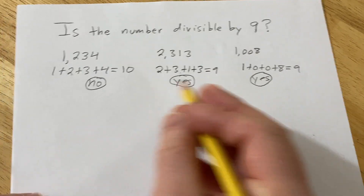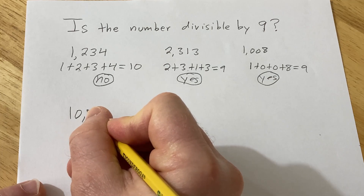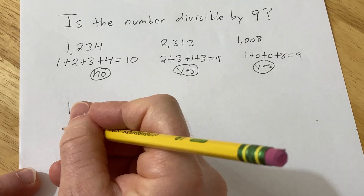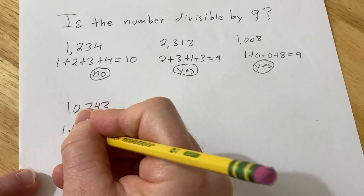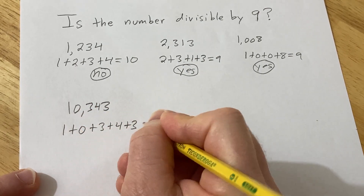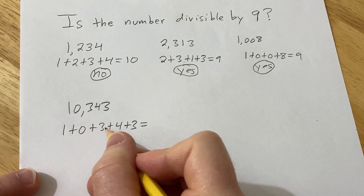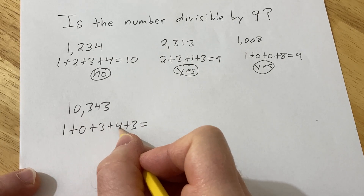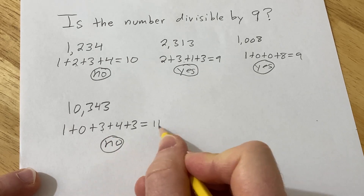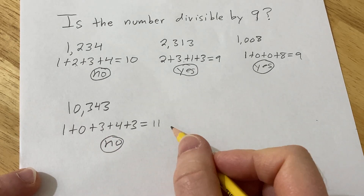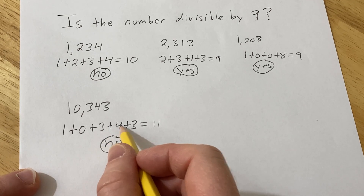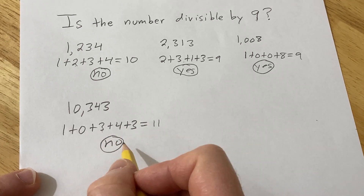Let's try bigger numbers. How about 10,343? Again, we just add the digits: 1 plus 0 plus 3 plus 4 plus 3. That's 1 plus 3 is 4, plus 4 is 8, plus 3 is 11. So the answer is no, because 11 is not divisible by 9. Let's check: 1 plus 3 is 4, plus 4 is 8, plus 3 is 11. So no.